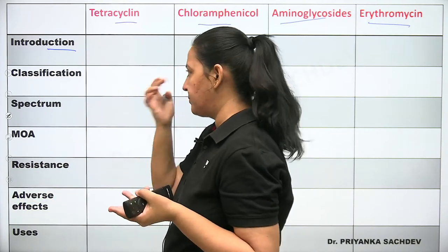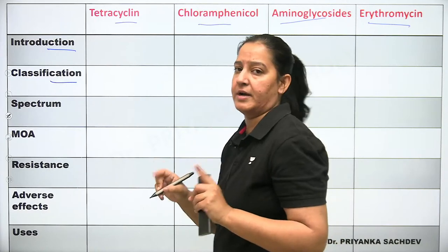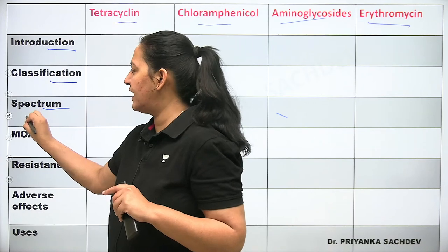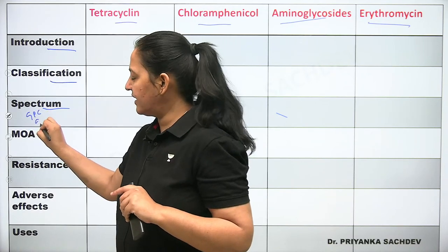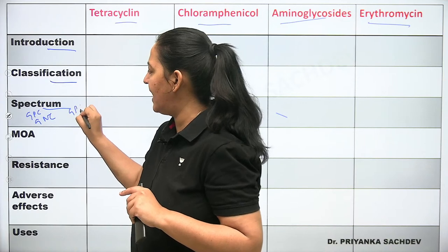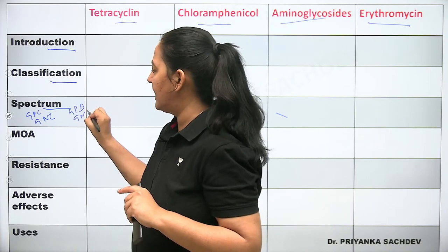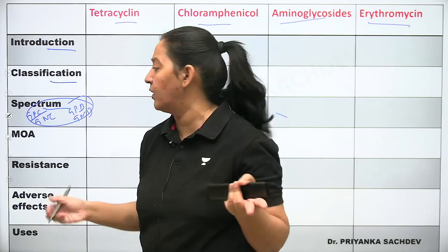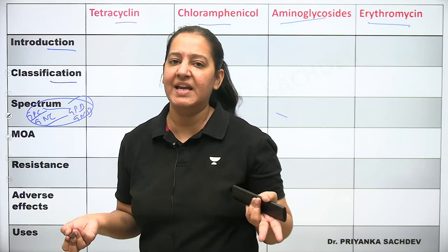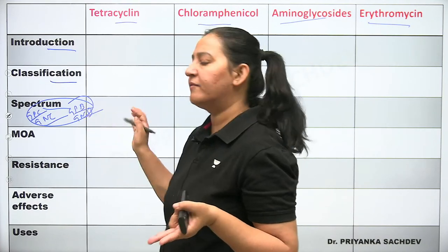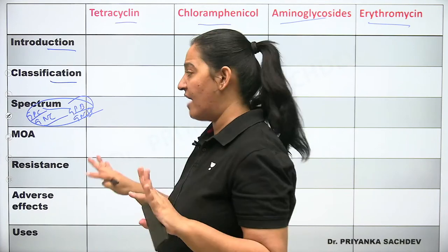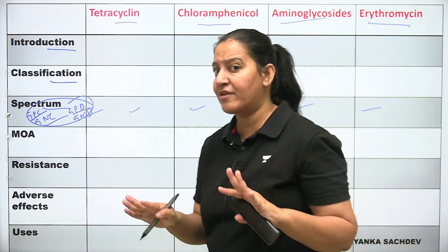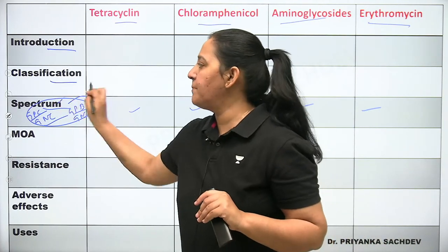Starting the first category — tetracycline. In the introduction: tetracycline is named because it has four rings (tetra = four) — specifically four benzene rings fused together in its chemical structure. It is obtained from actinomycetes. Write these two points in your table. Now the classification: tetracycline is a category containing seven individual antibiotics, divided into three groups.